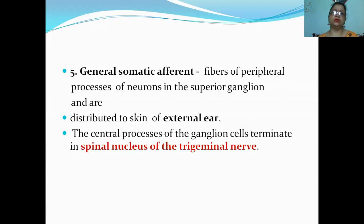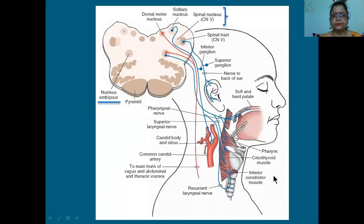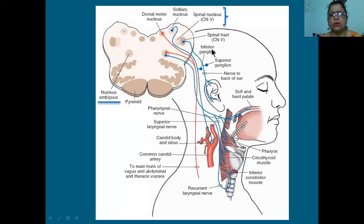Five functional components, and the last one is general somatic afferent - fibers are peripheral processes of neurons in the superior ganglion, distributed to the skin of the external ear. Their central processes terminate in the spinal nucleus of trigeminal nerve. So four nuclei in total: ambiguus, dorsal nucleus of vagus, nucleus of solitary tract, and spinal nucleus of trigeminal nerve.